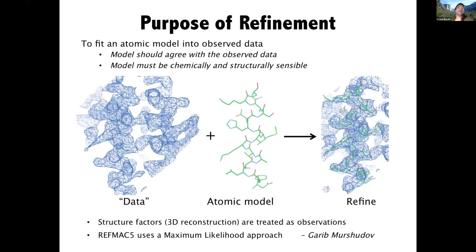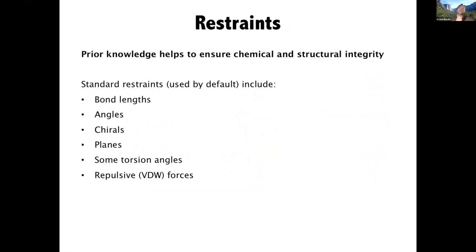The purpose of refinement is to fit an atomic model into observed data. The model should agree with the observed data and must be chemically and structurally sensible. In cryo-EM we treat the structure factors — the 3D reconstruction — as the observations, rightly or wrongly, and we take an initial model that has been fitted into the map and attempt to refine it. RefMAC uses a maximum likelihood approach as implemented by Garry.